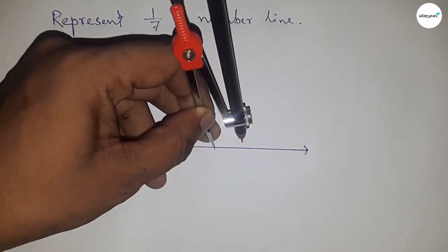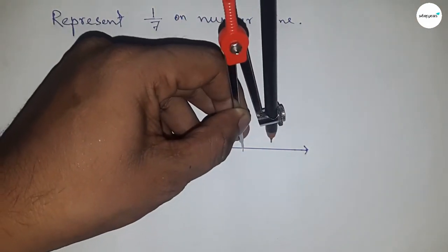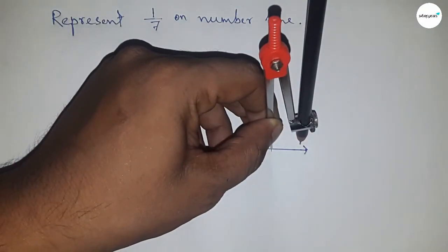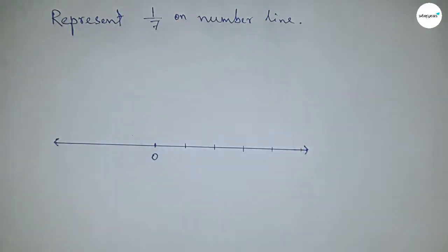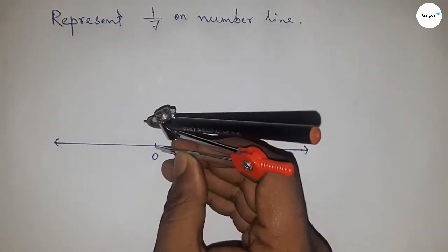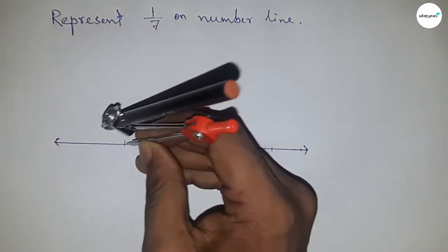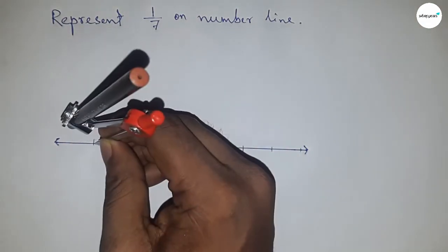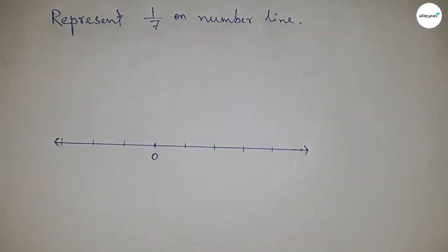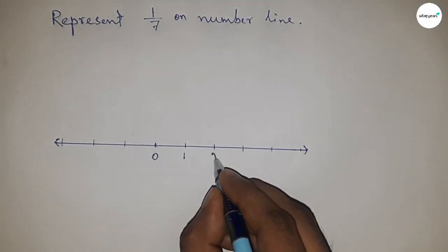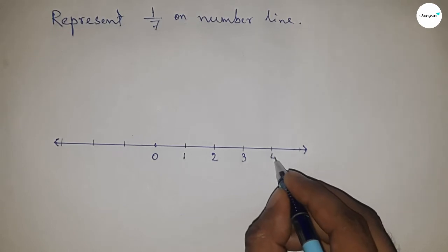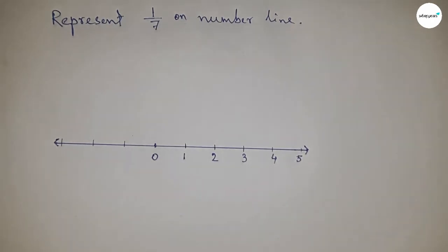and mark the numbers on the line this way. All lengths are equal, and this type of length is called a unit length. On this side we mark 1, 2, 3, 4, 5, and so